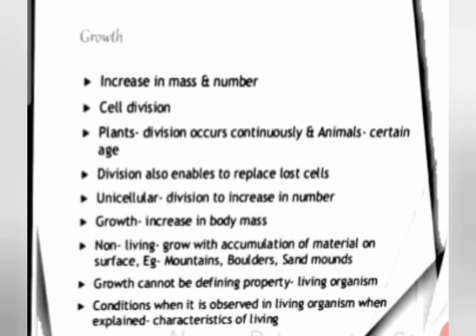In growth, cell division occurs — mitotic cell division occurs in somatic cells, which leads to growth. In the case of plant cells, division occurs throughout the life, so growth occurs continuously. But in animals, growth occurs only up to a certain age or limit. Cell division also enables replacement of lost or old cells with new cells.